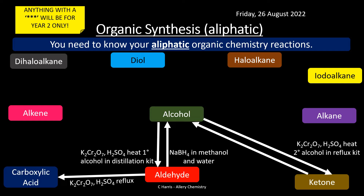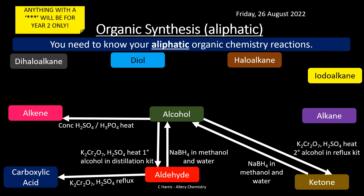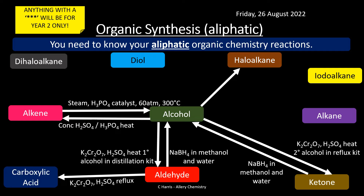Ketone to alcohol: sodium borohydride as a reducing agent in methanol and water. Alcohol to alkene: concentrated sulfuric acid or phosphoric acid with heat. Alkene to alcohol: steam, phosphoric acid catalyst, 60 atmospheres of pressure, and 300°C. Alcohol to haloalkane: sodium halide (NaX) plus H₂SO₄ at 20°C. Haloalkane to alcohol: warm sodium hydroxide, water, and reflux.